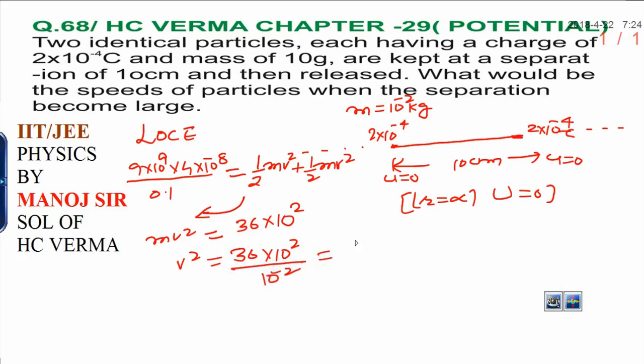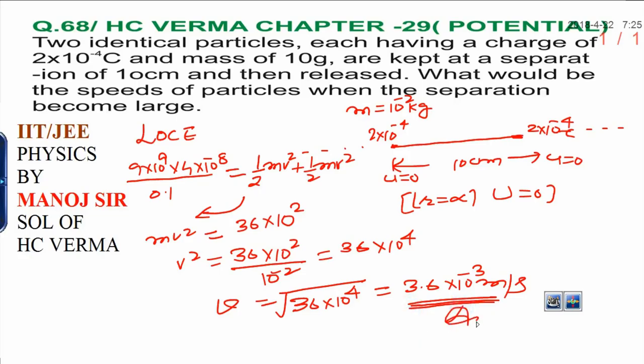And finally, it will be 36×10⁴. When you get the value, it will be root of 36×10⁴. And finally, answer will be 3.6×10⁻³ meters per second. Each particle has this kind of speed answer.